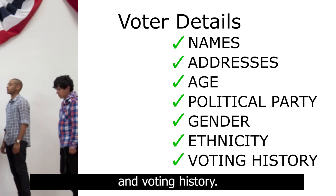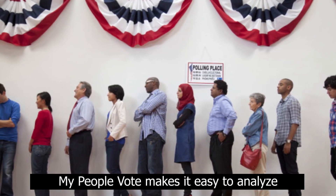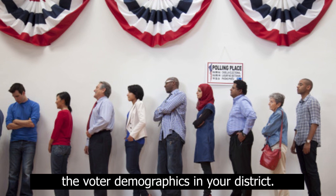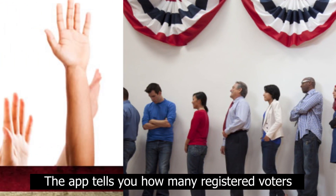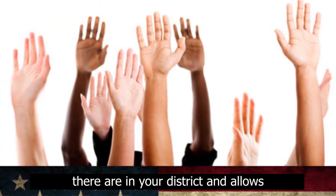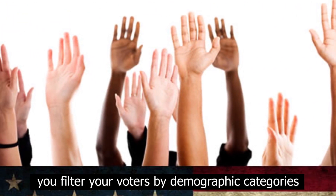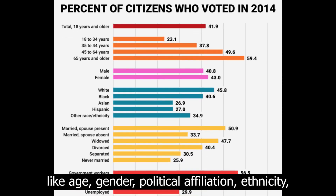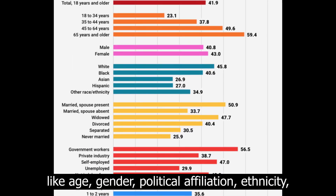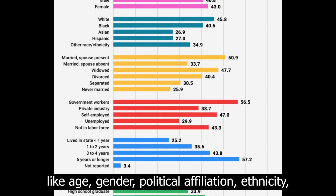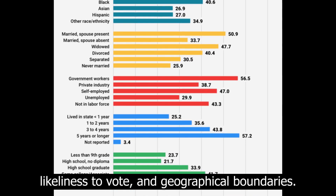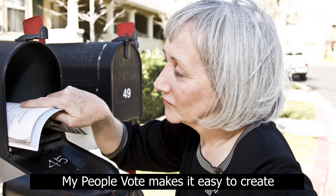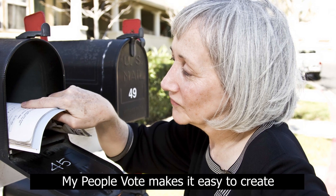My People Vote makes it easy to analyze the voter demographics in your district. The app tells you how many registered voters there are in your district and allows you to filter your voters by demographic categories like age, gender, political affiliation, ethnicity, likeliness to vote, and geographical boundaries.